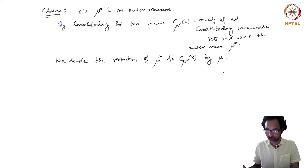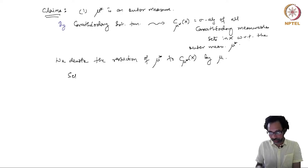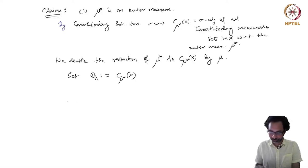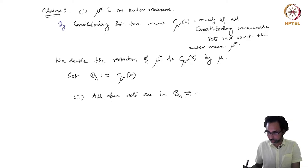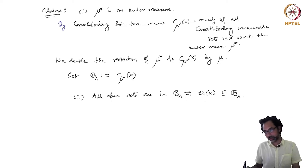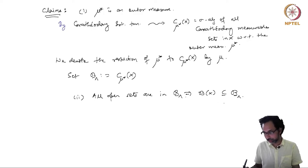This is again due to Carathéodory's extension theorem. We set our B_λ to be precisely this sigma algebra of Carathéodory measurable sets. The second claim is that all open sets are in B_λ, which implies that the Borel sigma algebra sits inside B_λ, because the Borel sigma algebra is the smallest sigma algebra containing all open sets.